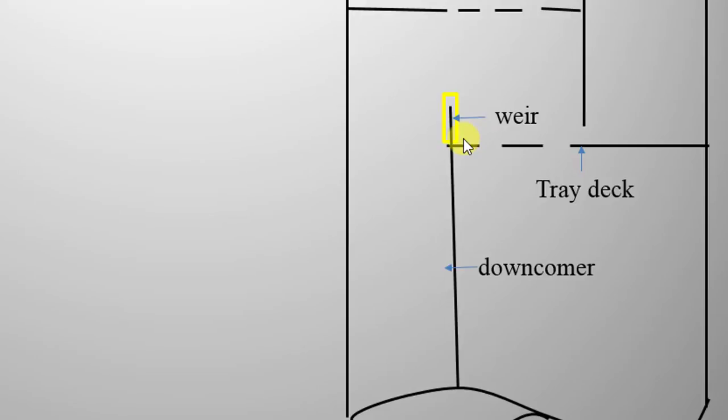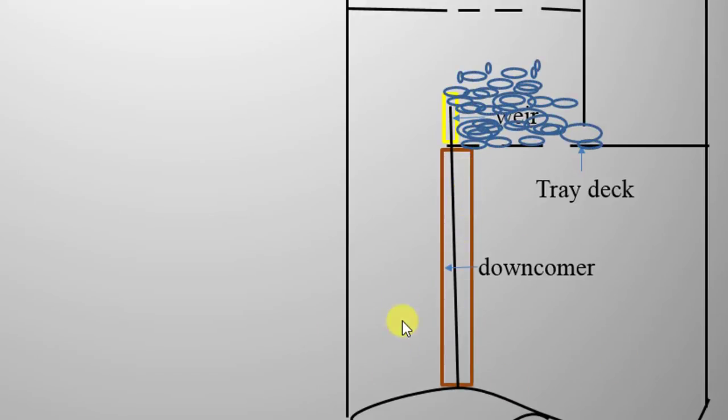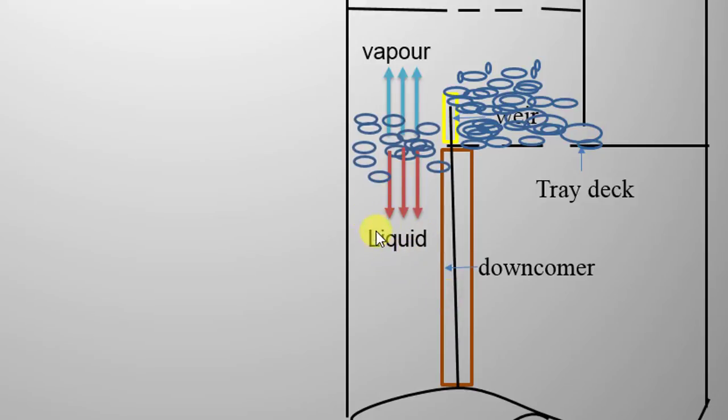Now coming to downcomer, the foam that overflows from the tray enters the downcomer. So the downcomer is used to guide the liquid from one tray to another. The other purpose of downcomer is to provide enough residence time for disengagement of entrapped vapor in liquid.